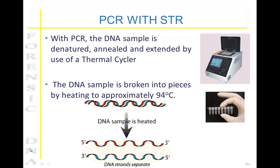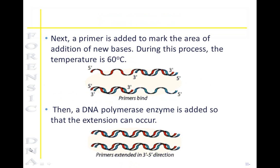PCR combined with STR goes through three different steps. The DNA sample is denatured, with bonds holding base pairs breaking apart, resulting in single strands of DNA. Then it goes through an annealing process and an extension through the use of a thermocycler. Initially, the samples are denatured and broken into pieces by heating at approximately 94 degrees centigrade. Next, a primer is added to mark areas for addition of new bases so that the exposed bases can be paired with a complementary base, which ultimately extends the DNA. This process is done at a temperature of approximately 60 degrees so that the bases will bind.